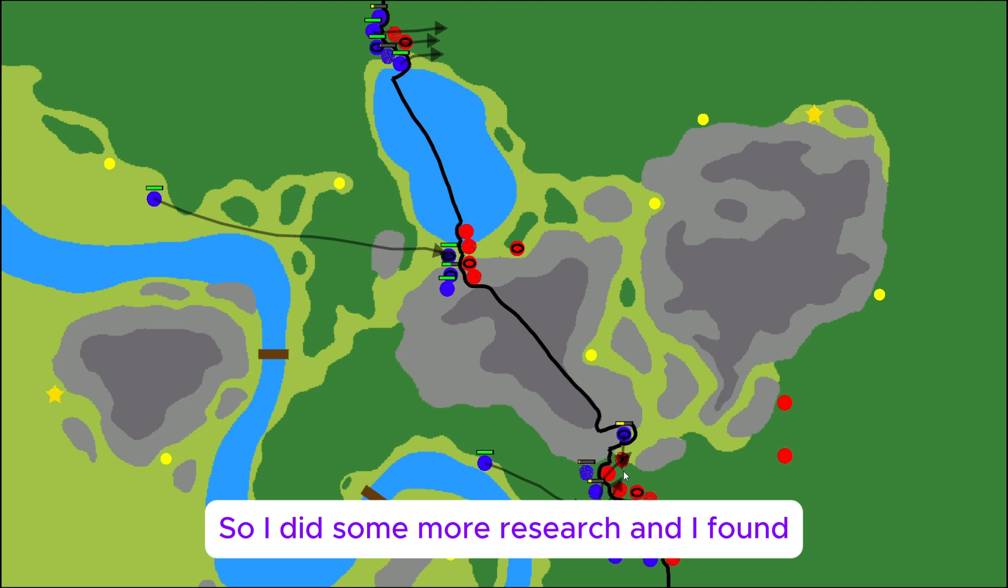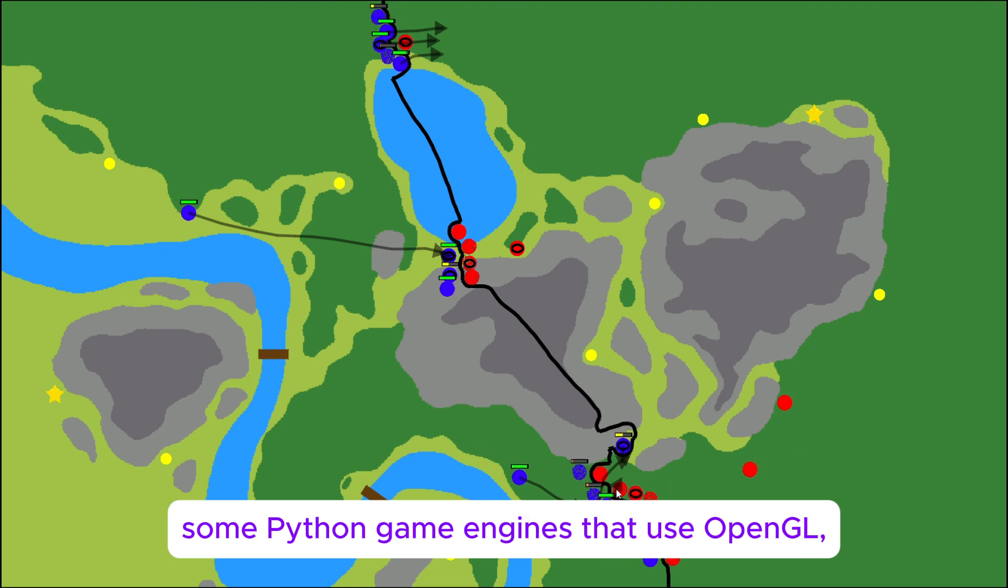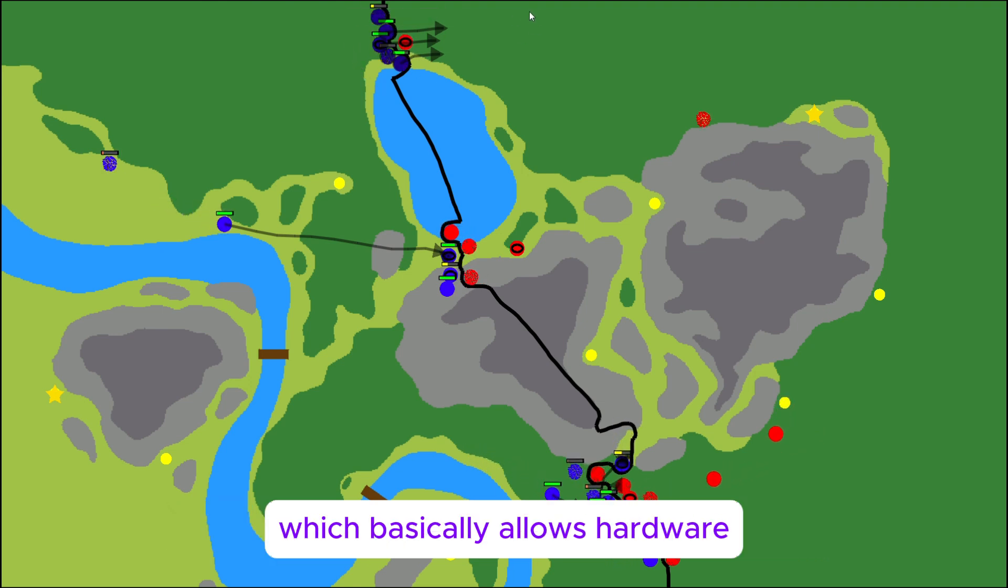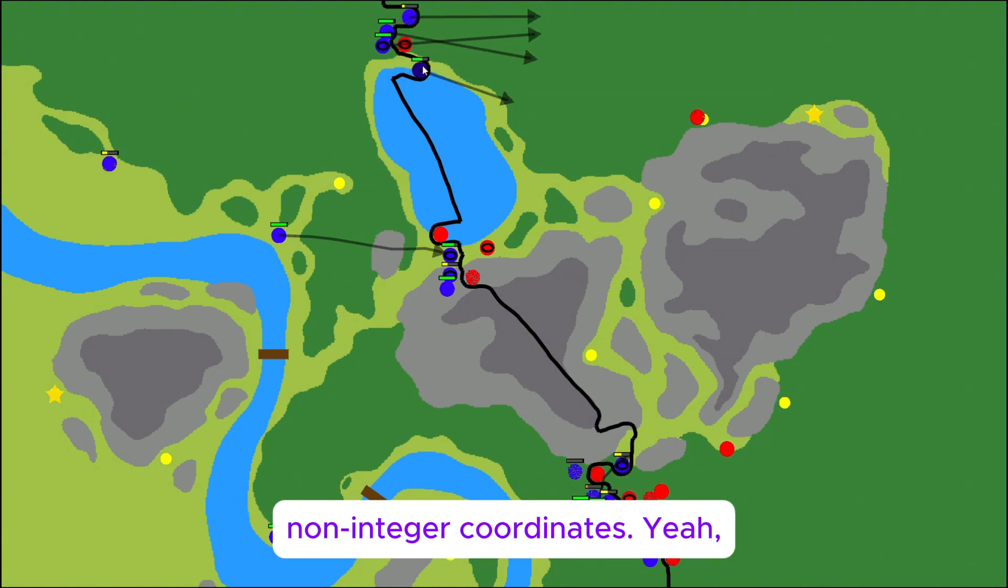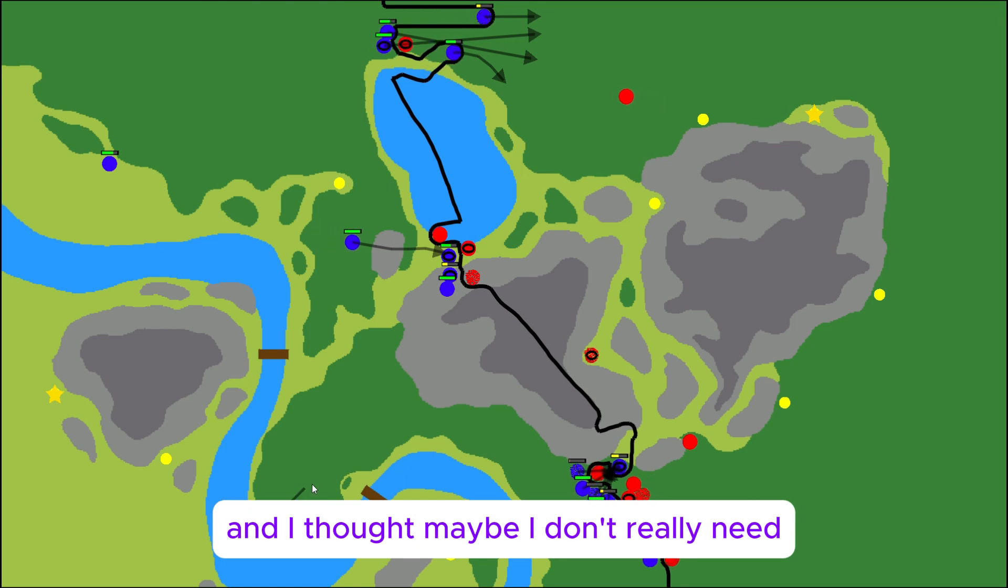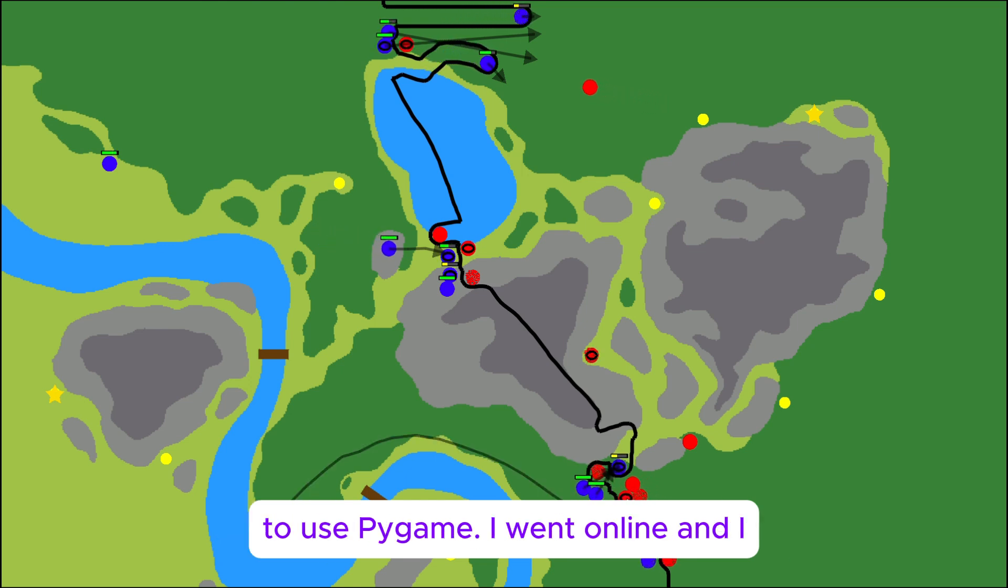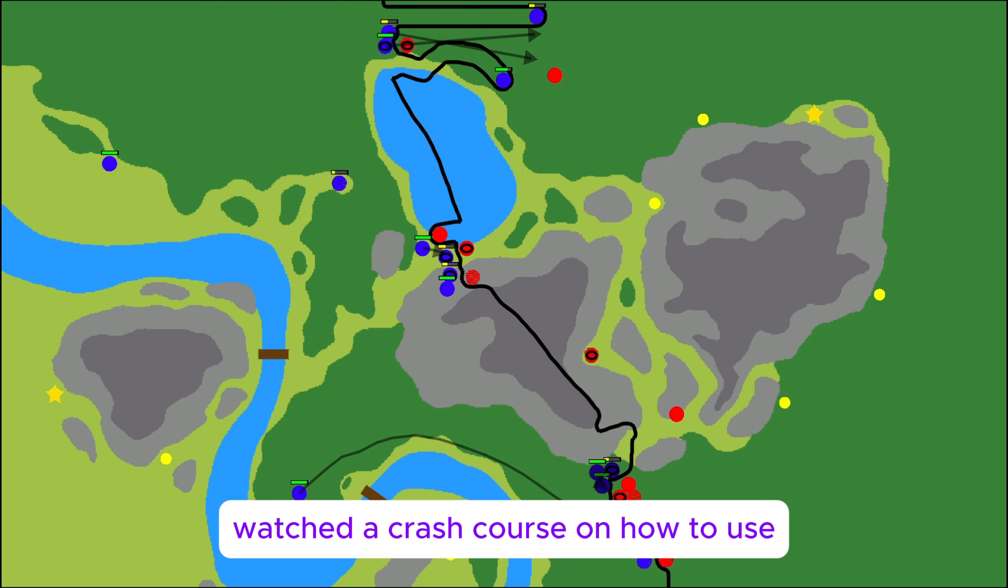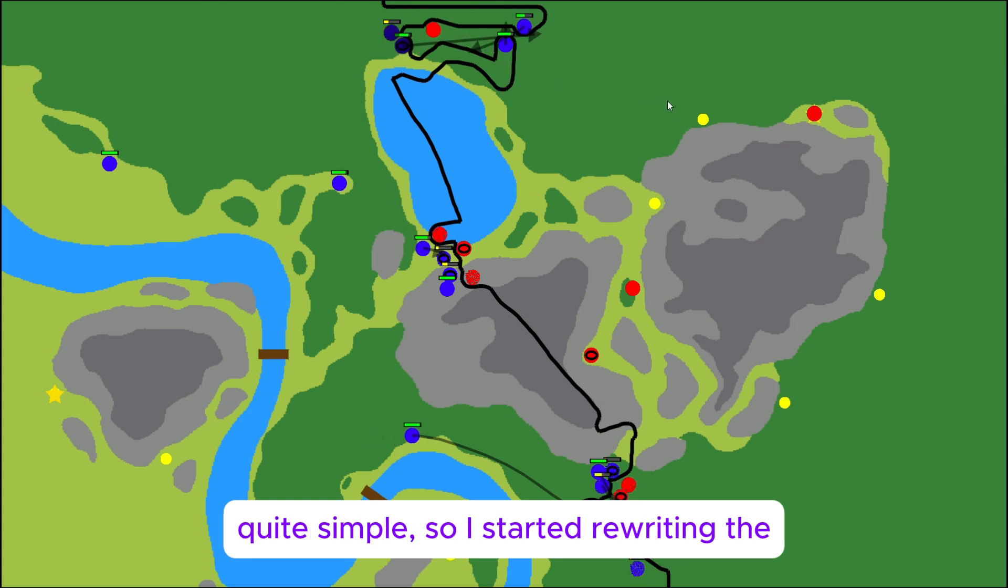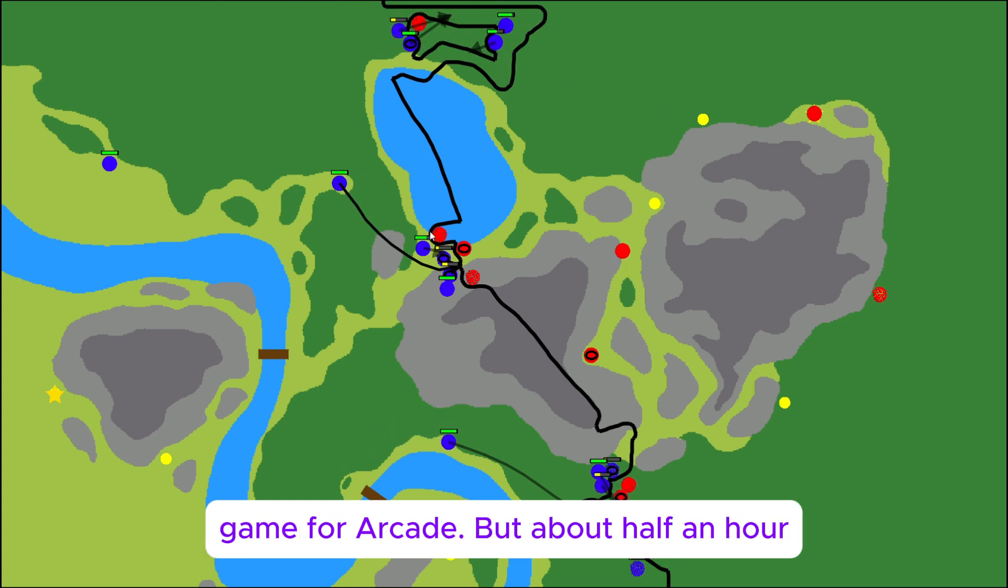So I did some more research, and I found some Python game engines that use OpenGL, which basically allows hardware-accelerated rendering and supports non-integer coordinates. And I thought, maybe I don't really need to use PyGame. I went online and watched a crash course on how to use Arcade, which is another popular game engine. It seemed to be quite simple, so I started rewriting the game for Arcade.